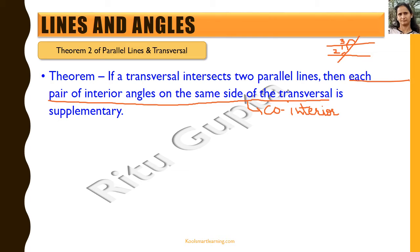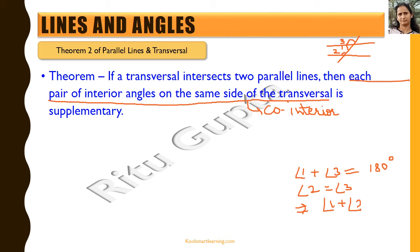We take this angle as 3. By definition, angle 1 plus angle 3 — because they are a linear pair of angles — they add up to 180 degrees. We also know that angle 2 is equal to angle 3 as corresponding angles. So this implies that angle 1 plus angle 2 is equal to 180 degrees. Essentially, the co-interior angles when a transversal intersects two parallel lines always add up to 180 degrees — that is, the co-interior angles are supplementary.